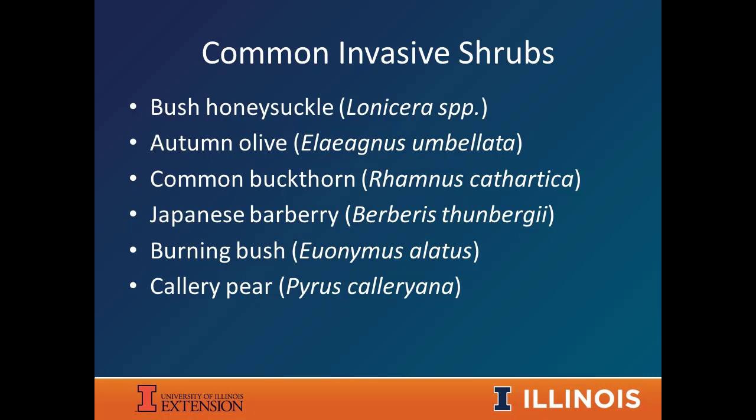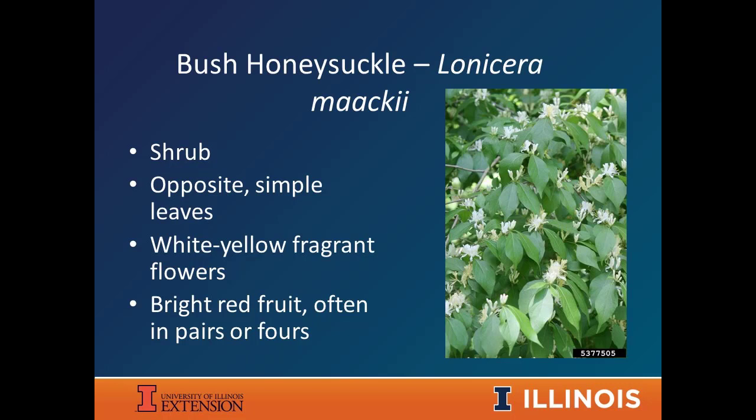There are a bunch of different invasive shrubs we deal with, but the common ones in this region include bush honeysuckle at the top — that's one of our biggest issues — autumn olive, which is less shade tolerant but still gets into our forests, buckthorn which is a big problem particularly to the east, and three newer ones you may be less familiar with: barberry, burning bush, and callery pear.